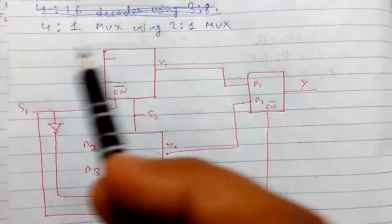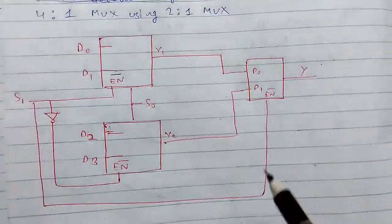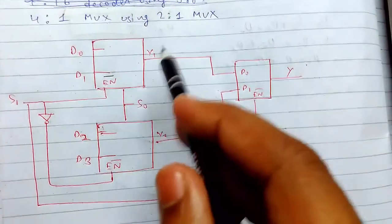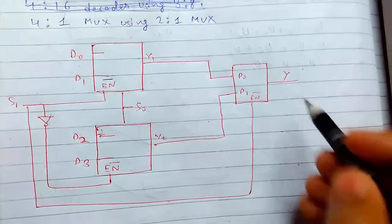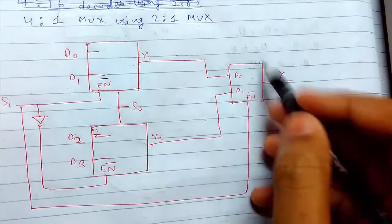We will be designing a 4 to 1 mux using 2 to 1 mux. This is the circuit for it. There are three 2 to 1 muxes. We can also use OR gate here, but we have used the mux.